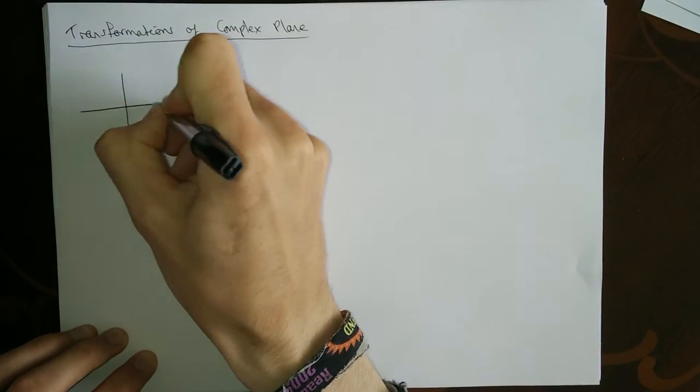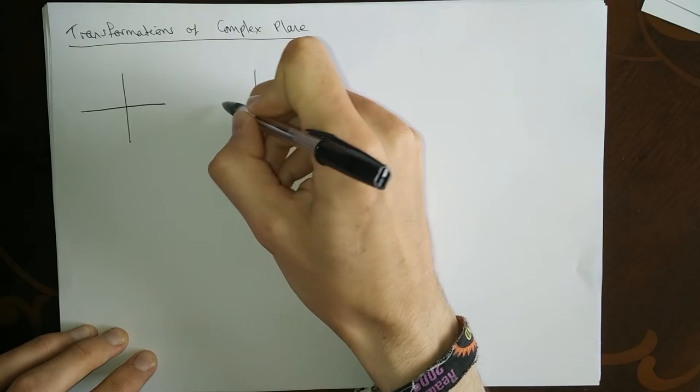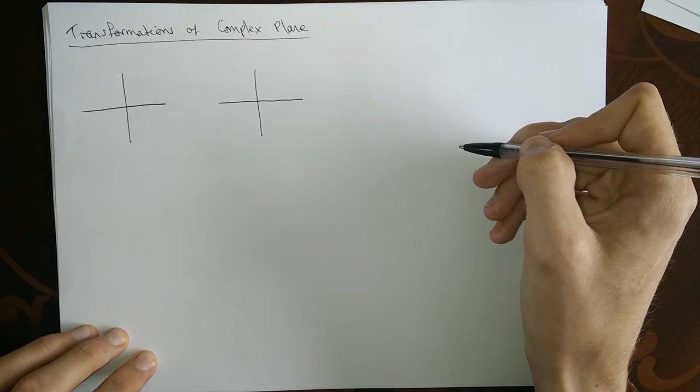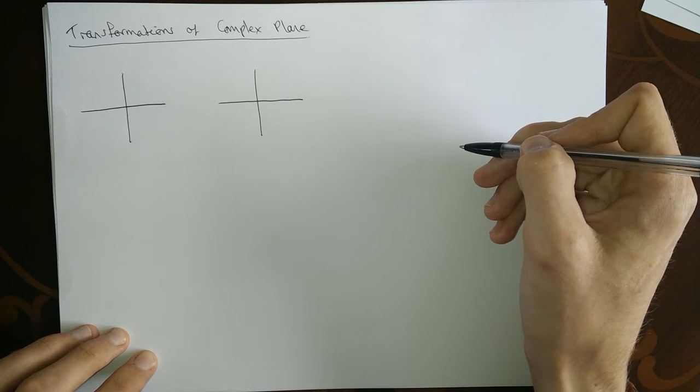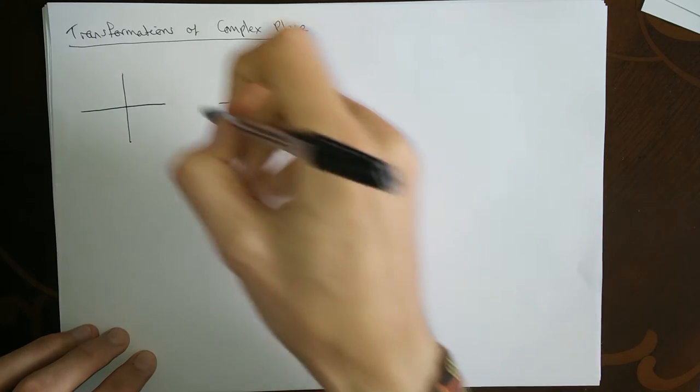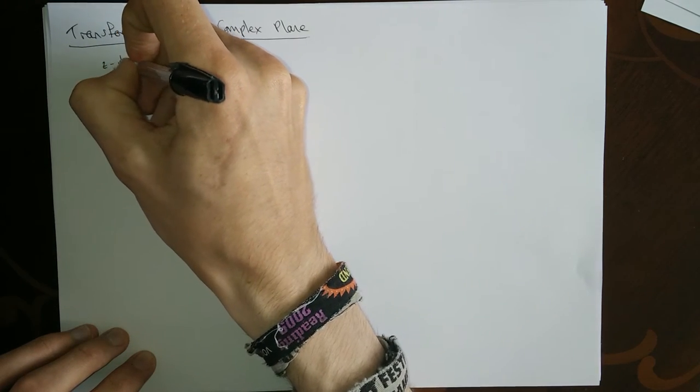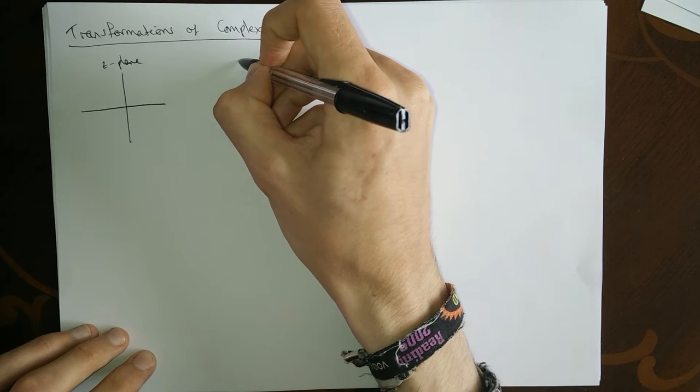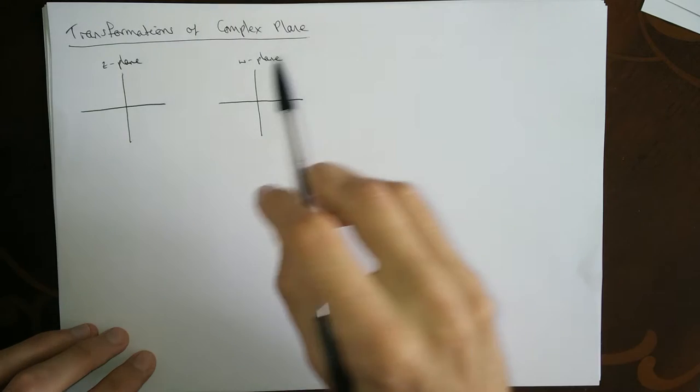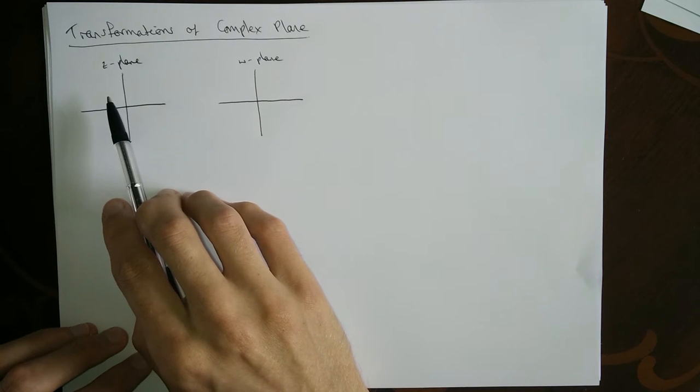Today we're going to get our heads around what it means to be a complex transformation, just the terminology really, and see some of our old familiar transformations from GCSE just represented in complex number format. So here we have two planes: the z plane and the w plane. This is reminiscent of functions where you have your input and your output.